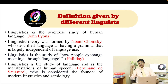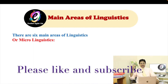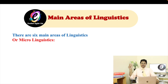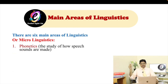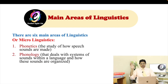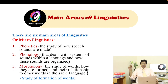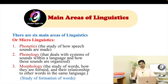Now let me talk about the main areas of linguistics. There are six main areas of micro linguistics. Number one: phonetics — the study of how speech sounds are made. Number two: phonology — the system of sounds within a language and how these sounds are organized. Number three: morphology — the study of words, how they are formed, and their relationship to other words in the same language; in short, the study of word formation.